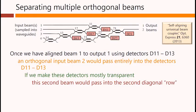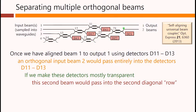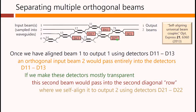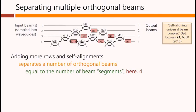If we make these detectors mostly transparent, all of this second beam would actually pass into the second diagonal row, that is, this diagonal row of Mach-Zehnders, where we could self-align it to output 2 using power minimization in these two detectors. This would separate two overlapping orthogonal beams to separate outputs, which actually is something that we really did not know how to do before.